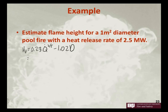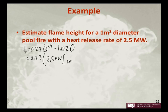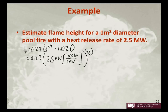So here we have 0.23 times 2.5 megawatts. Since 1 megawatt is 1,000 kilowatts, we raise that to the 2/5 power — putting that in parentheses in our calculator — and subtract 1.02 times 1 meter.